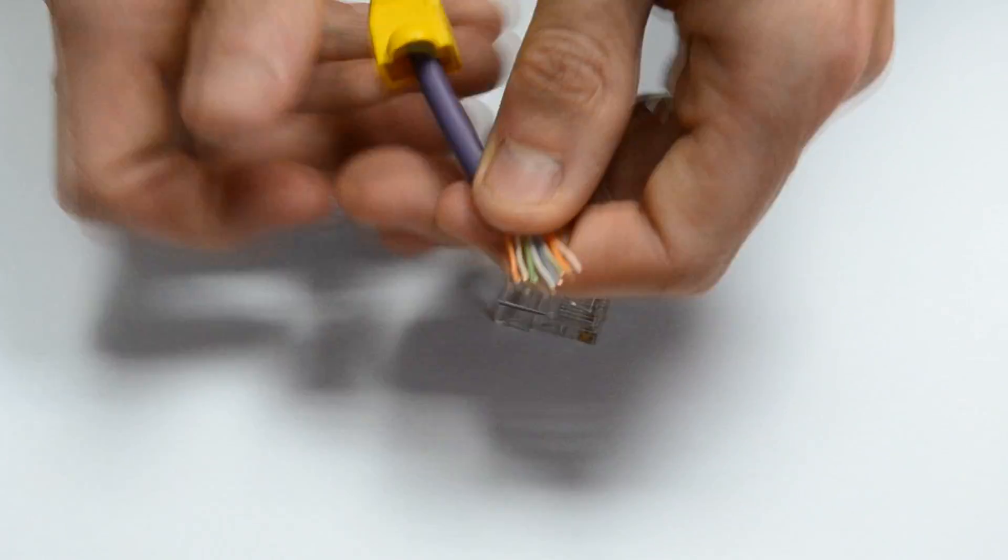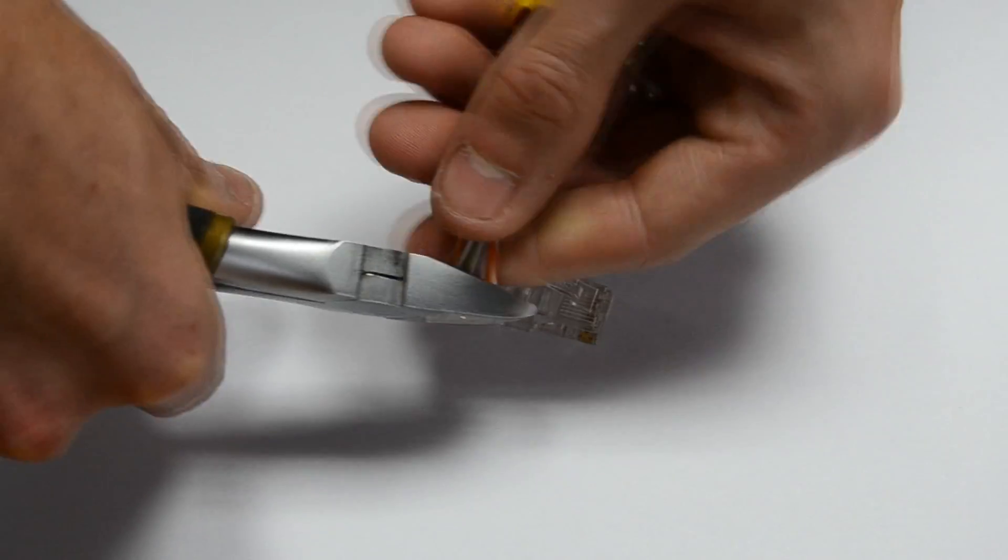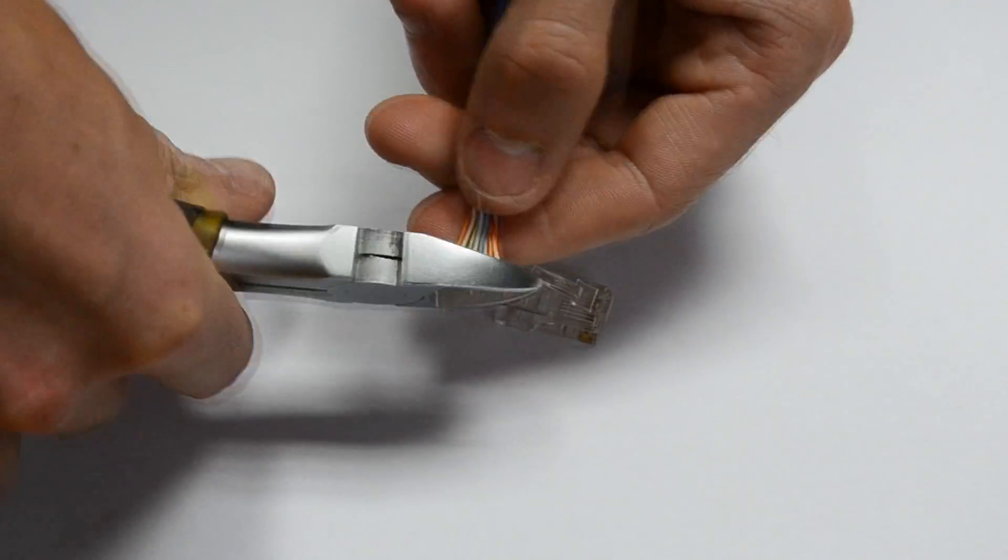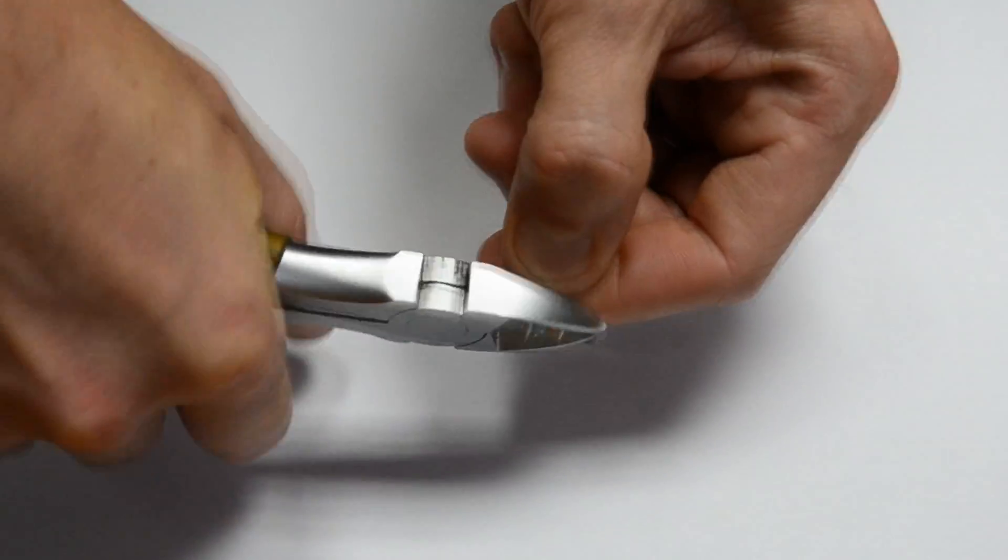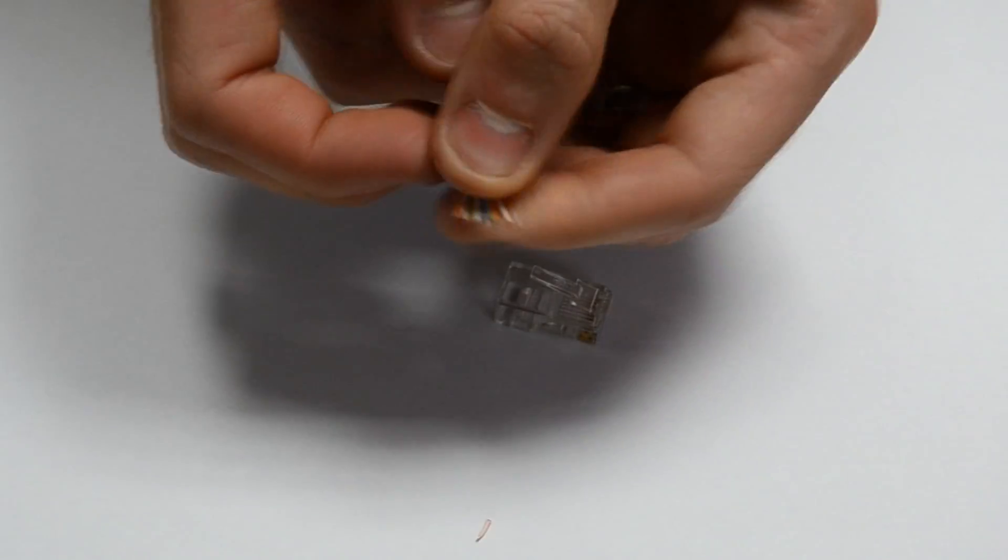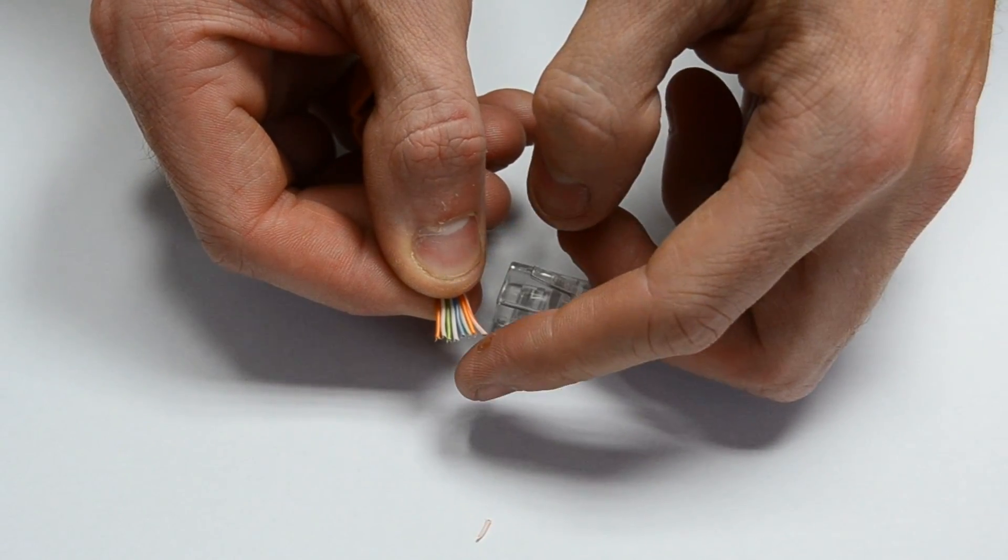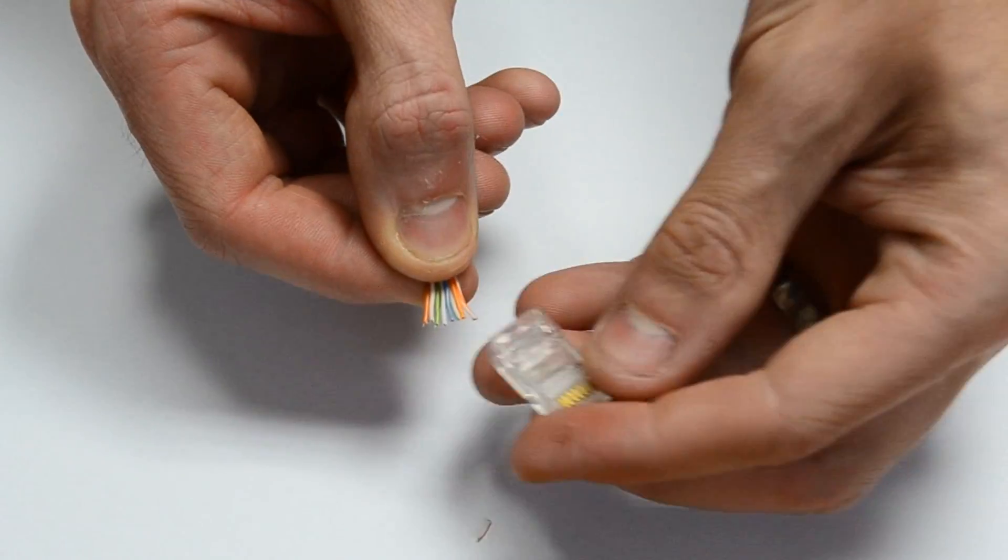Once you've got the cables in a suitable position and they're all in order as shown here, we're going to take the cable cutters and just create a nice straight edge on them because you notice they're all slightly different lengths. And we're just going to cut the ends off and it gives us a nice straight clean edge. This just makes it a lot easier to pull it into the RJ45 termination.